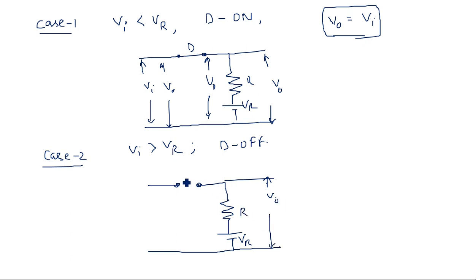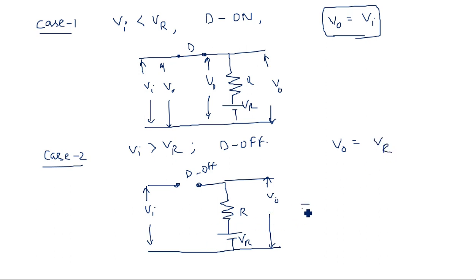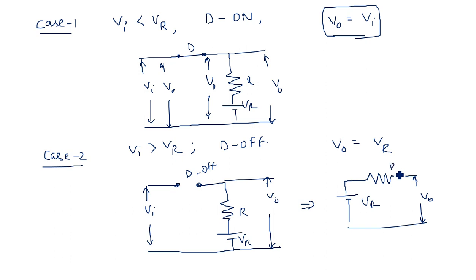With the diode in off state (open circuited), there is no connection between the input and output. Whatever current is produced by VR must go through V0 because both are in the same loop. So V0 is equal to VR. The same circuit is redrawn: VR is present, the input is disconnected due to the open circuit, and with the resistor and output voltage V0 in the same loop, Vout equals VR. This is the second case.